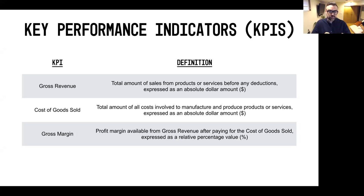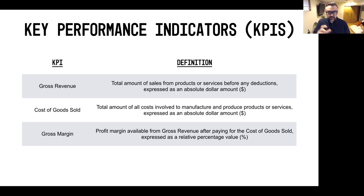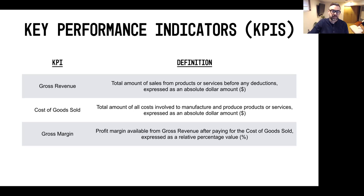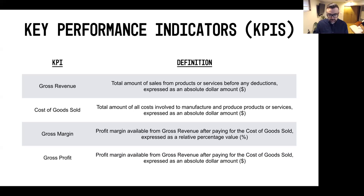Then we've got the two terms we've been talking about interchangeably — gross margin and gross profit. Gross margin is basically the difference between those two: you take your gross revenue, subtract your cost of goods sold, and divide that over your gross revenue to get a gross margin percentage. Gross profit is the difference between your revenue and your cost of goods sold expressed as an absolute dollar number. So really the difference is one is a dollar value versus one is a percentage value.